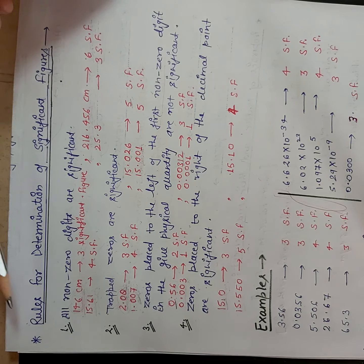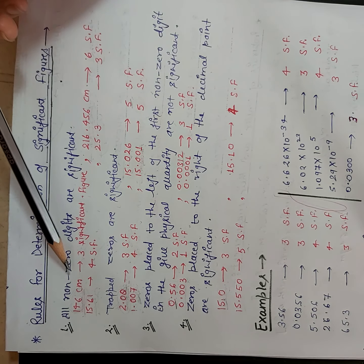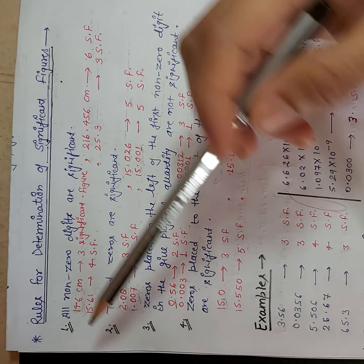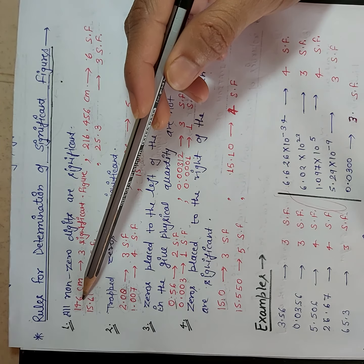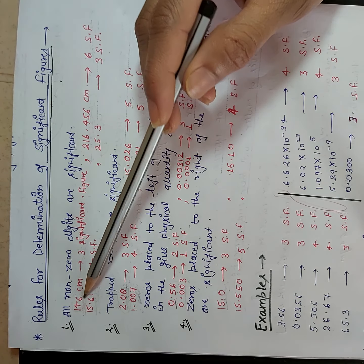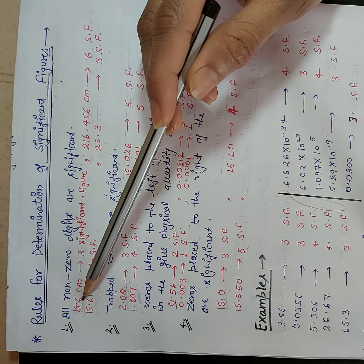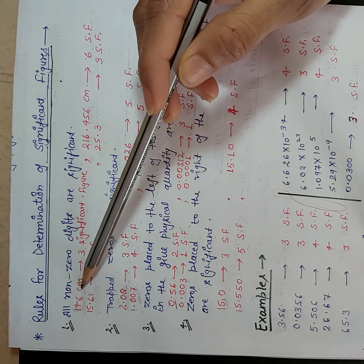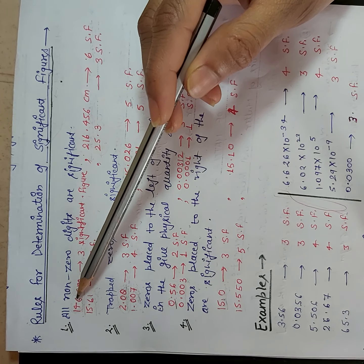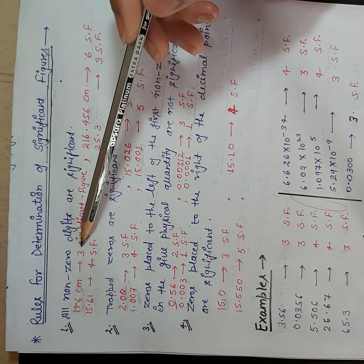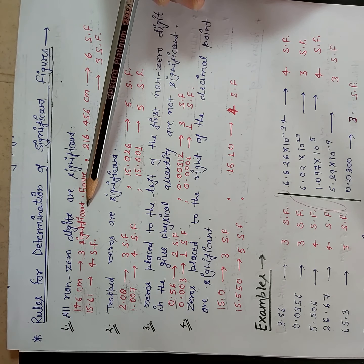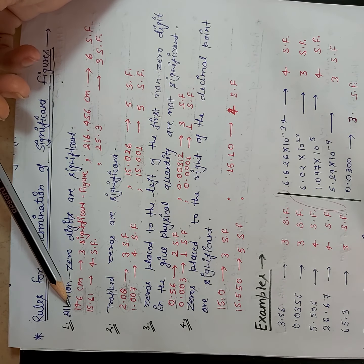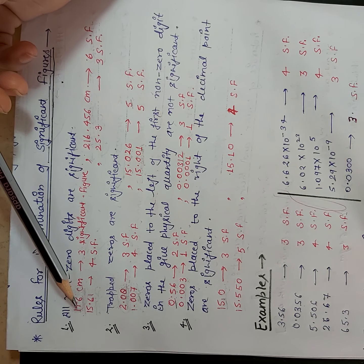Our first rule is: all non-zero digits are significant. For example, see this example — 146. Here no zero is present, so all the given digits are non-zero digits. So obviously all the digits will be considered as significant figures. So in this number there are three significant figures. Why three? Because 1, 2, and 3 — three non-zero digits are given.